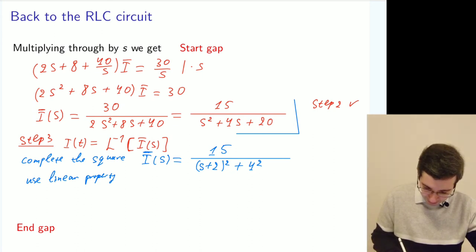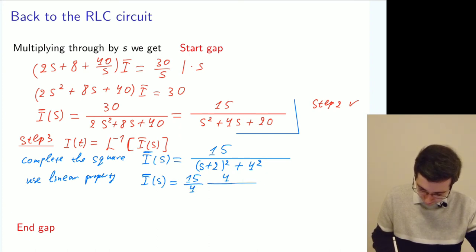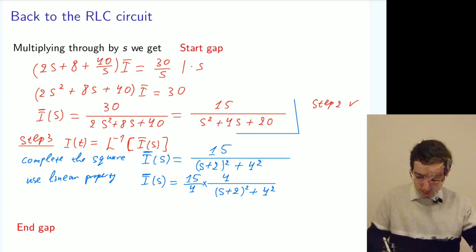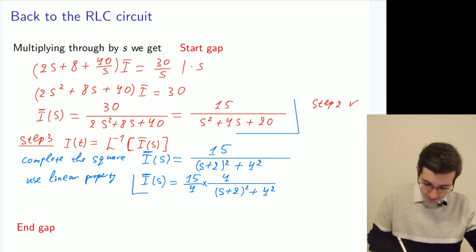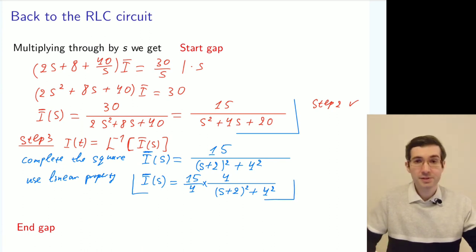And we can take out a constant factor. So multiply and divide by 4. So it's the same denominator, (s+2)² + 4². And now we're ready to apply the inverse Laplace transform.